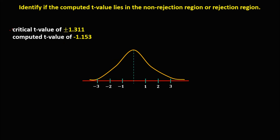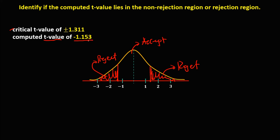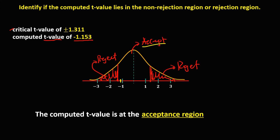For the third given, the critical t-values are positive and negative 1.311. This area beyond negative 1.311 is the rejection region, and this area beyond positive 1.311 is also the rejection region. The middle area is the acceptance region. The computed t-value is negative 1.153, which belongs to the acceptance region. Therefore, the computed t-value is at the acceptance region.